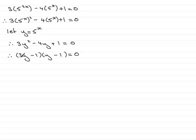Now that we've got it factorized, we can put each of the factors equal to 0. So therefore 3y minus 1 equals 0, or y minus 1 equals 0.